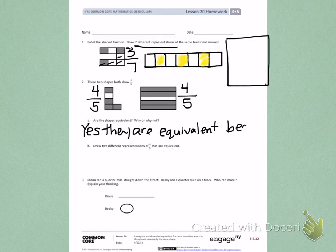They are equivalent because they both show 4 fifths. The shapes might be different, but they are both showing 4 parts shaded and 5 equal parts.